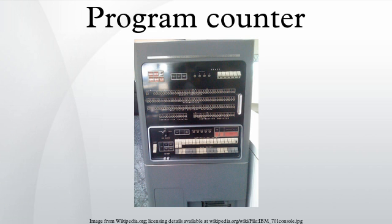Hardware implementation: in a typical central processing unit, the PC is a digital counter that may be one of many registers in the CPU hardware. The instruction cycle begins with a fetch, in which the CPU places the value of the PC on the address bus to send it to the memory. The memory responds by sending the contents of that memory location on the data bus following the fetch. The CPU proceeds to execution, taking some action based on the memory contents that it obtained. At some point in this cycle, the PC will be modified so that the next instruction executed is a different one.